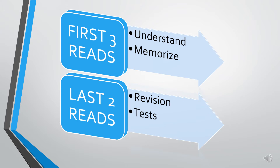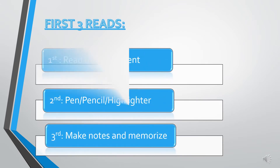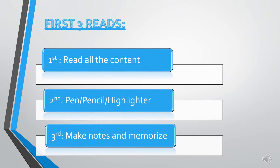In this video, I will share with you a short clip to demonstrate how it's done. In the first read, read all the content to understand the information given and to get a brief idea on what's important. In the second read, use pen, pencil, highlighter and mark everything that seems important to you.